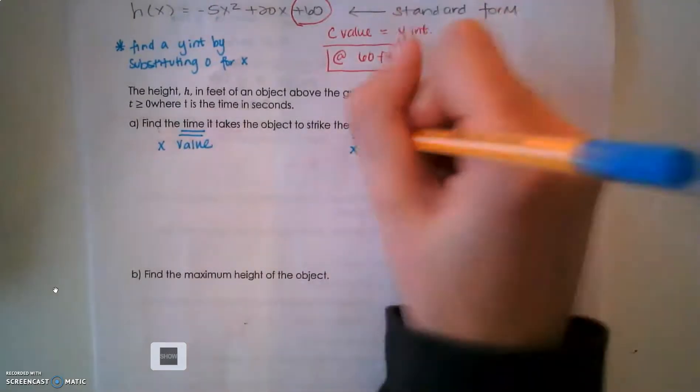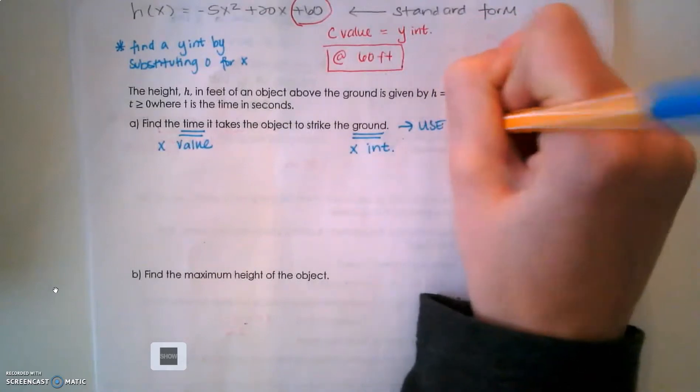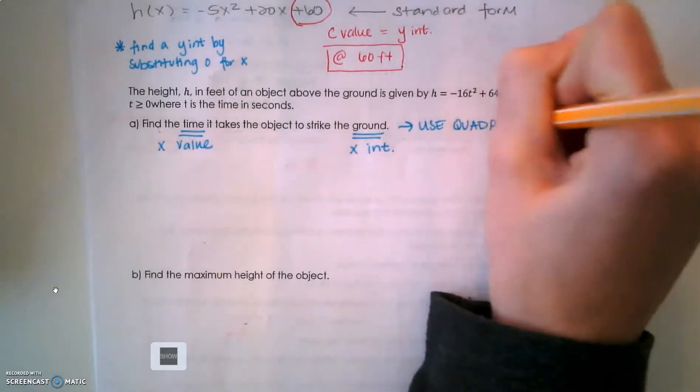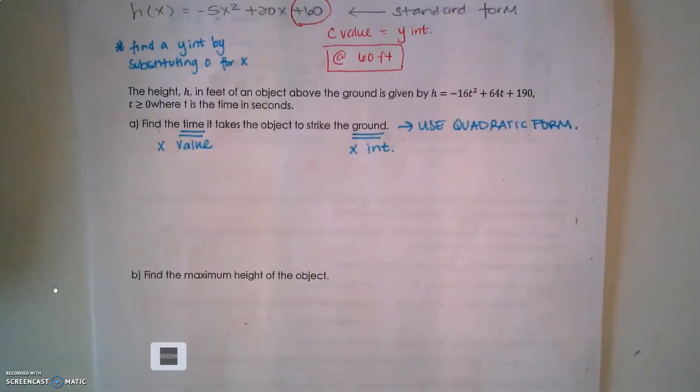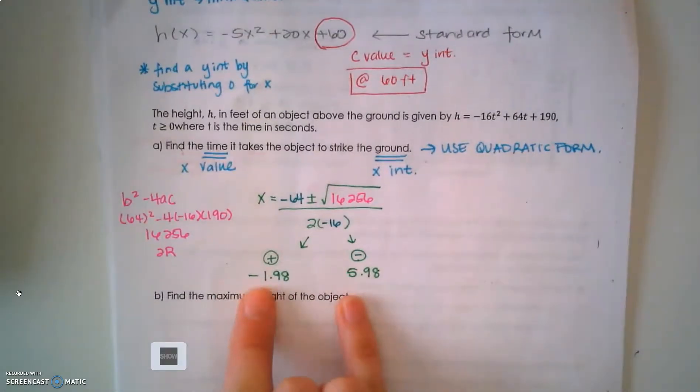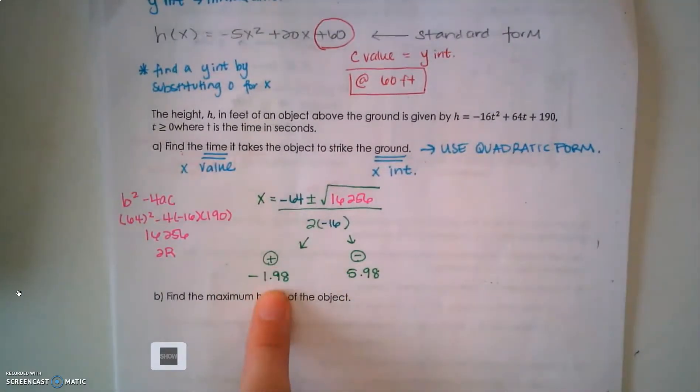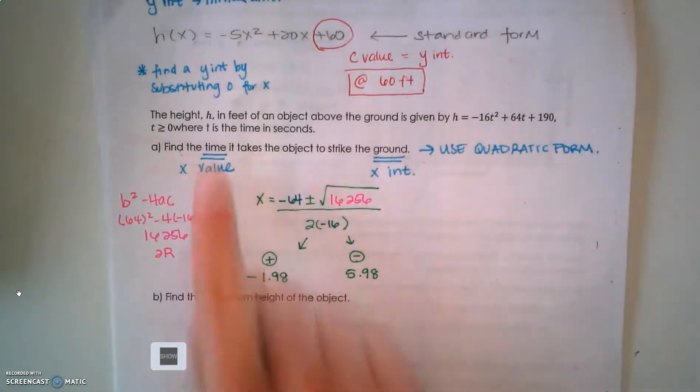Which tells me I'm going to use the quadratic formula. Go ahead and pause the video and use the quadratic formula to find these x-intercepts. When I use this quadratic formula, I find these two answers: when I added my square root, I got negative 1.98; when I subtracted my square root, I got 5.98.